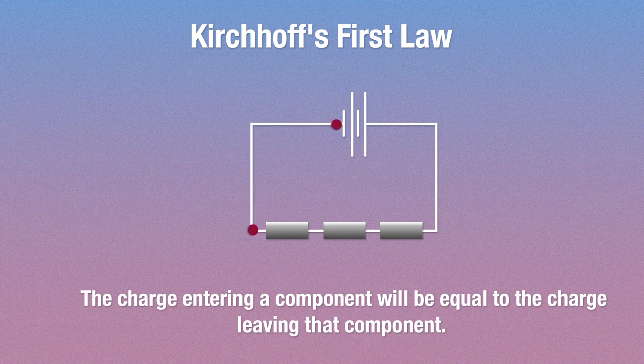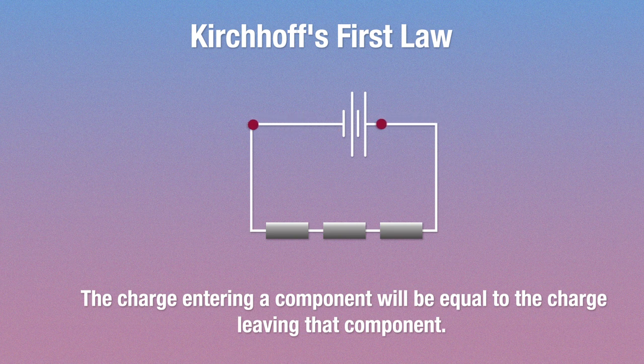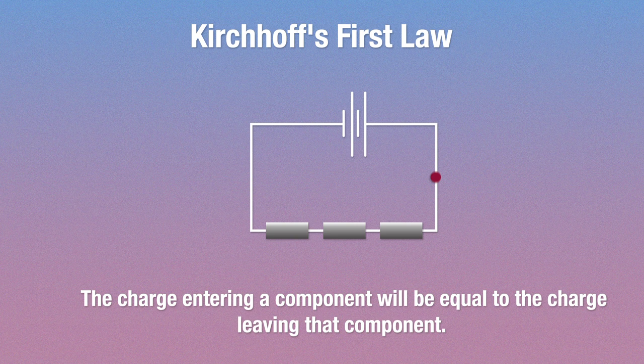So if we take this and apply this to series circuits, with the current entering each component being the same as the current leaving that component, you could also say that the current before and after a set of components connected in series should also stay the same, right? The current shouldn't change.